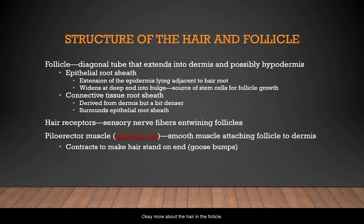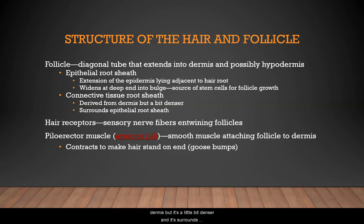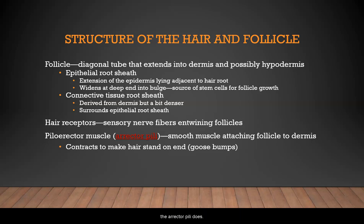The hair follicle is a diagonal tube that extends into the dermis and sometimes the hypodermis. The epithelial root sheath is an extension of the epidermis lying adjacent to the hair root; it widens at its deep end into the bulge, which is the source of stem cells for follicle growth. The connective tissue root sheath, derived from the dermis, surrounds the epithelial root sheath. Hair receptors are sensory nerve fibers that entwine the follicles. The erector pili is a smooth muscle that attaches the follicle to the dermis and contracts to make hair stand on end, giving you goosebumps.